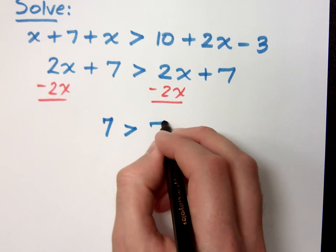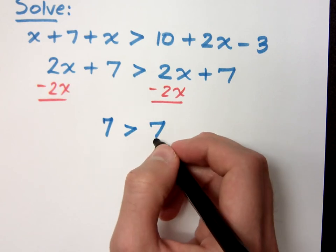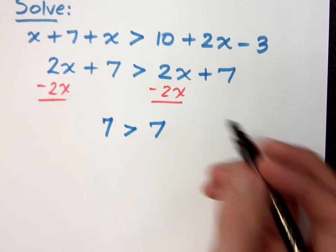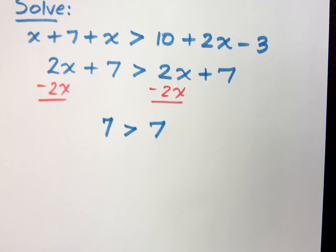7 is greater than 7. See, this is one of the things we have to pay attention to. When all of your variables cancel out, you have to be able to look at the statement and determine whether or not it's true or false.